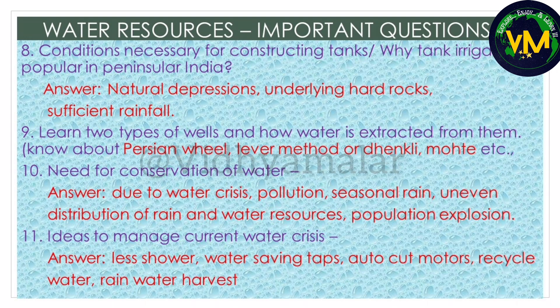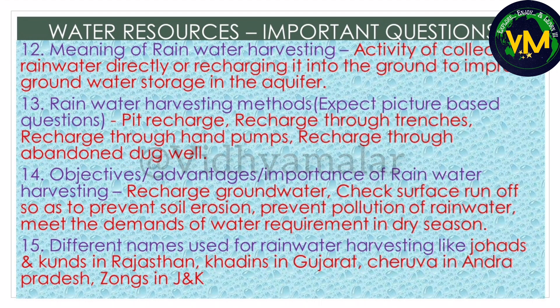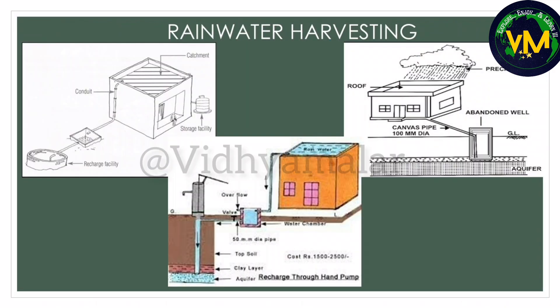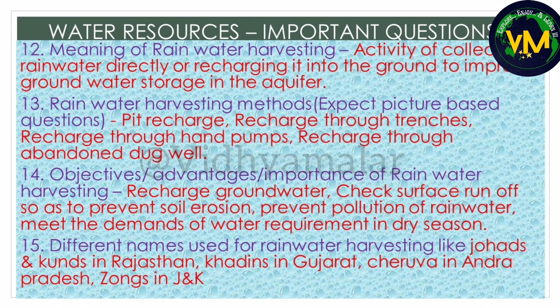The need for conservation of water is also a repeated question, as are ideas to manage the current water crisis. Coming to rainwater harvesting, every year one question from rainwater harvesting is compulsory. First, learn the definition or meaning of rainwater harvesting, then learn the methods - expect picture-based questions on methods. If they ask for objectives, advantages, or importance of rainwater harvesting, write these points. MCQs may also ask about different names used for rainwater harvesting.